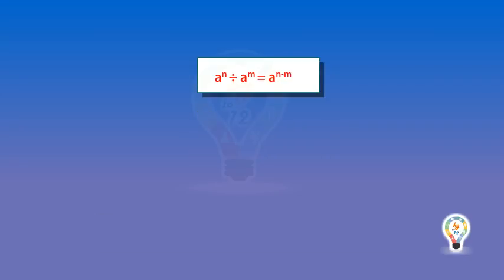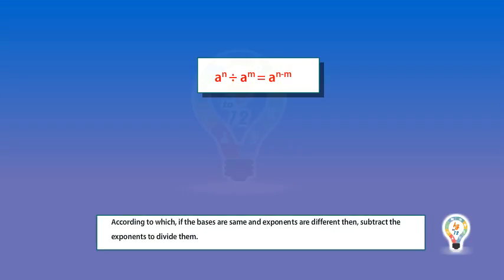The second law is a to the power n divided by a to the power m equals a to the power n minus m. According to this law, if the bases are same and the exponents are different, then subtract the exponents to divide them.